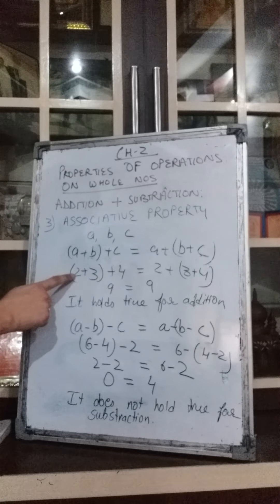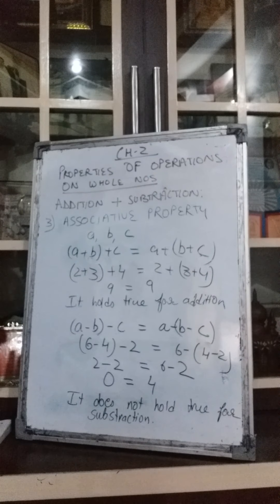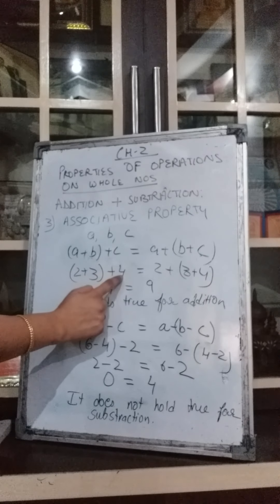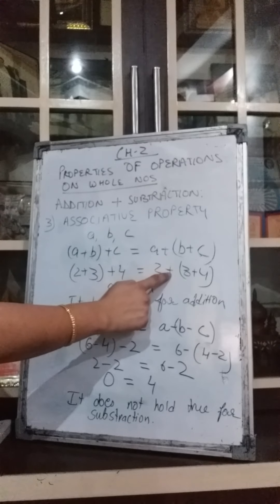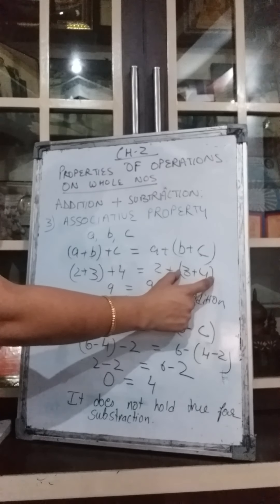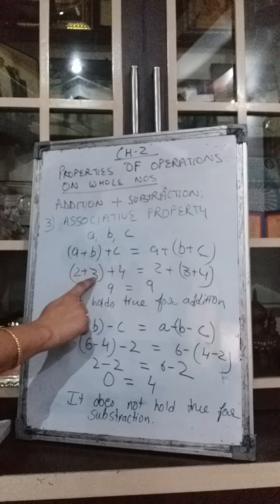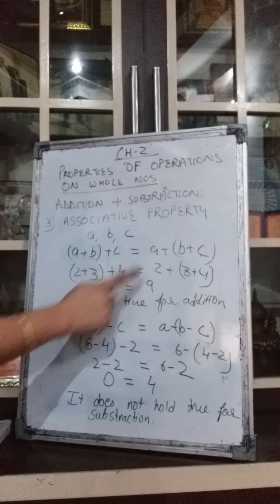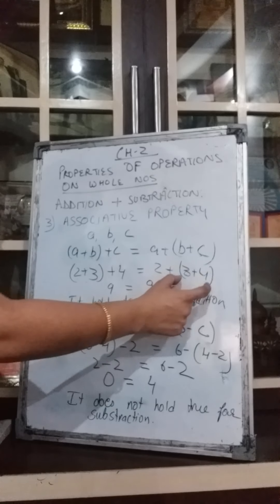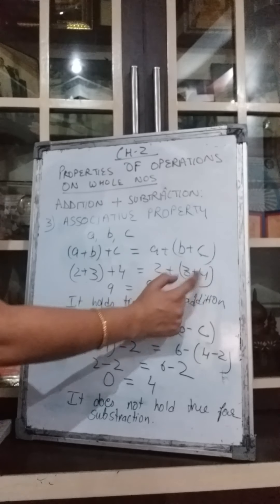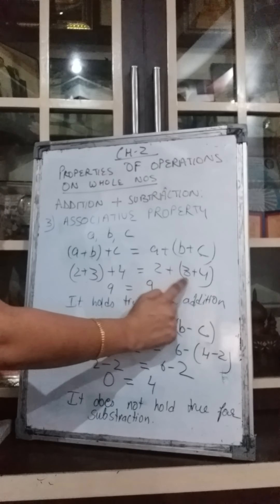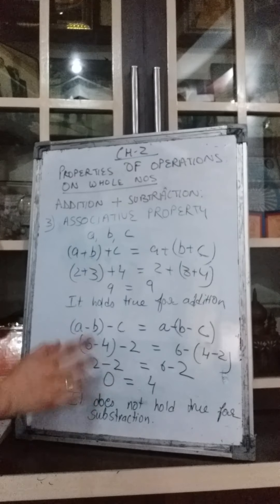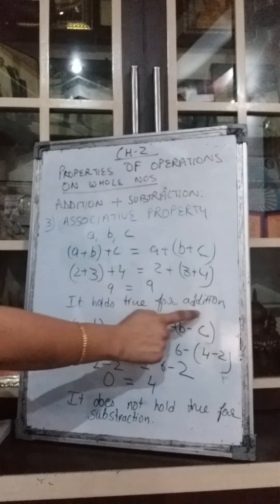Let us check whether associative property holds true for addition. Take A as 2, B as 3 and C as 4. Left hand side: (2 plus 3) plus 4 — first 2 plus 3 gives 5, then 5 plus 4 gives 9. Right hand side: 2 plus (3 plus 4) — 3 plus 4 gives 7, then 2 plus 7 gives 9. Left hand side equals right hand side, so this property holds true for addition.